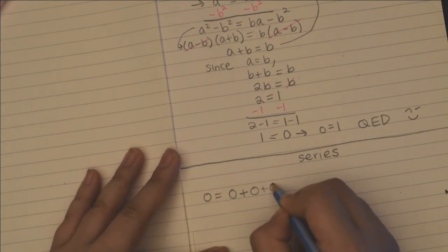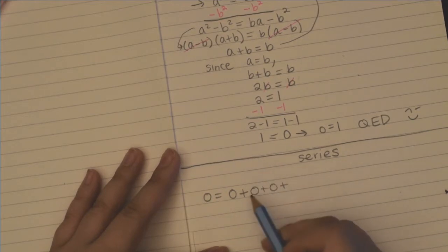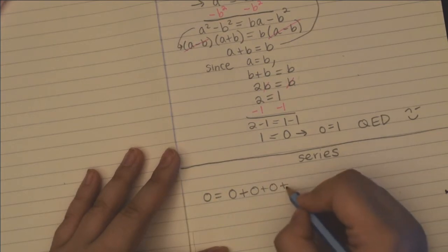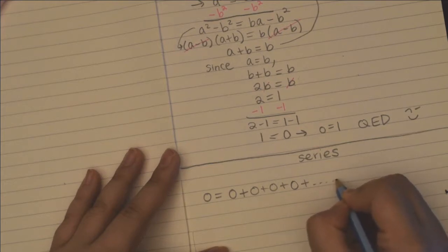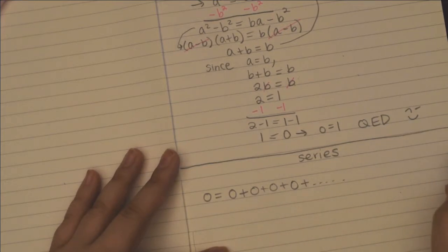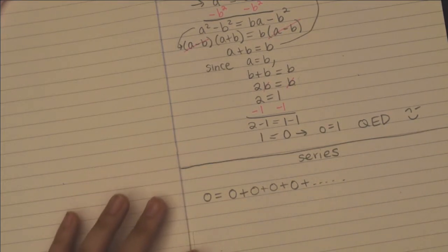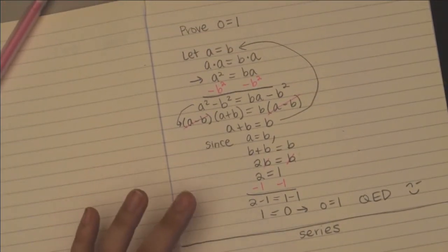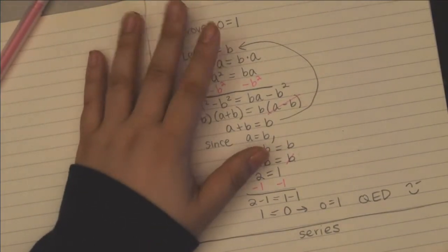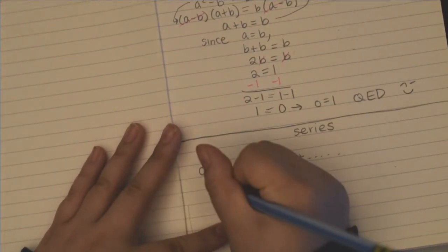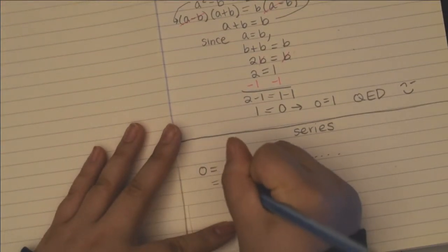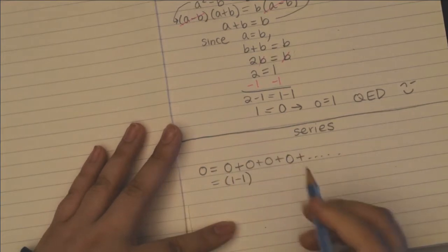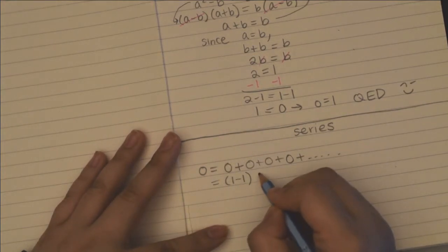So, 0 plus 0 plus 0 — sums, meaning adding 0 plus dot dot dot to infinity. And since we want to introduce 1s here, I'm going to write 0 as 1 minus 1. Which is fine — 1 minus 1 is 0.